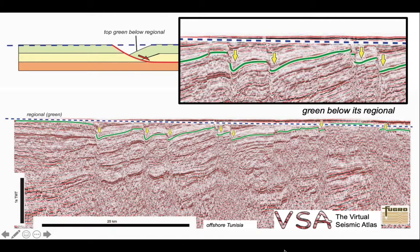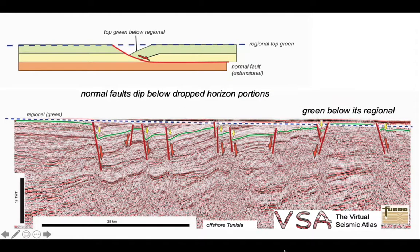Let's zoom in on here. We can see that behavior perhaps rather more clearly. And we could interpret a series of normal faults dropping below the more down-thrown parts of the green horizon.